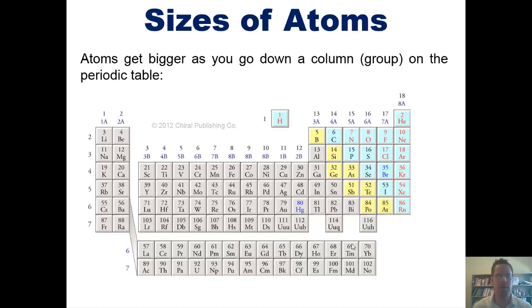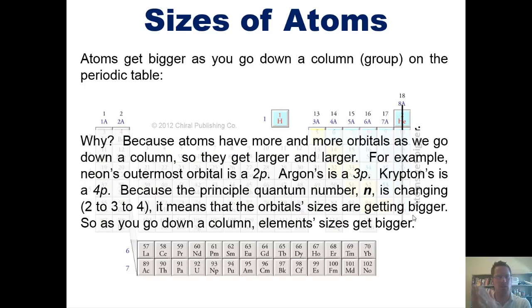As it turns out, atoms get bigger as you go down a column or a group on the periodic table. Why? Well, because atoms, as you go down a column on the periodic table, have more and more orbitals and more and more electrons. Hence, they get larger and larger.